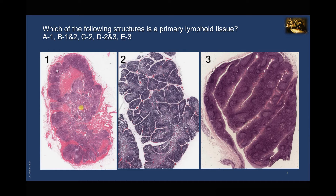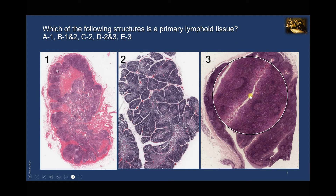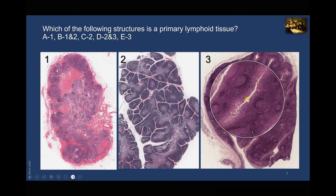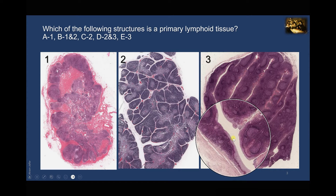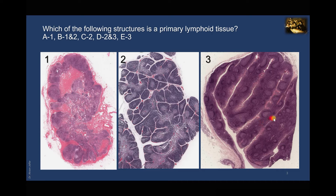A secondary lymphatic organ is not always surrounded by a capsule of connective tissue; sometimes it is non-encapsulated, like lymphatic nodules shown here in image three. These lymphatic nodules are located underneath the mucosa, hence they are called mucosa-associated lymphoid tissue or MALT. The section in image three shows lymphatic nodules with light-staining germinal centers, but the entire tissue is not surrounded by a connective tissue capsule. It is covered by non-keratinizing stratified squamous epithelium, and the aggregates show crypts, indicating the tissue is derived from tonsils in the pharynx. So image three is again a secondary lymphatic organ that is non-encapsulated.